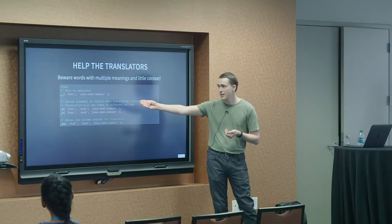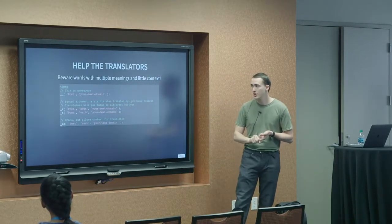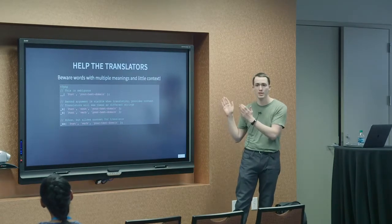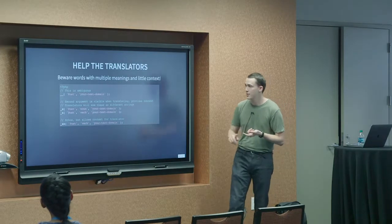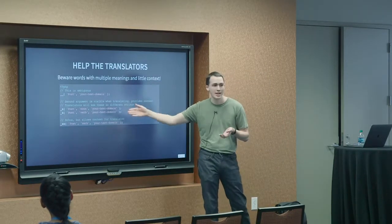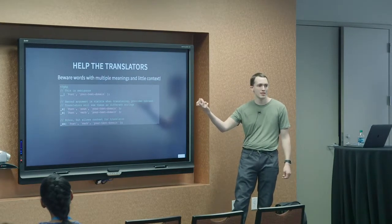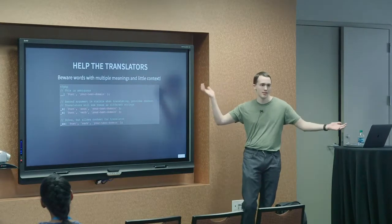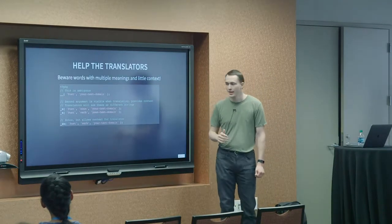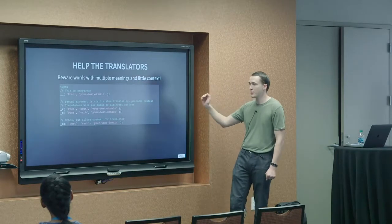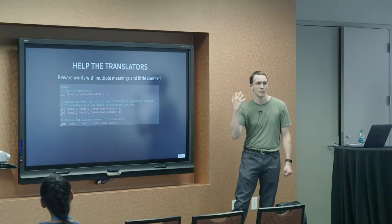And so there is the underscore x function, which takes a third argument. So text domain gets moved to be the third argument, and the second argument is the context. And so you can specify it's a noun, it's a verb. You could specify that it's menu text. You could specify that it is the single version of a post type name. And all that does is help the translators know what the intent is in the word, what it means.